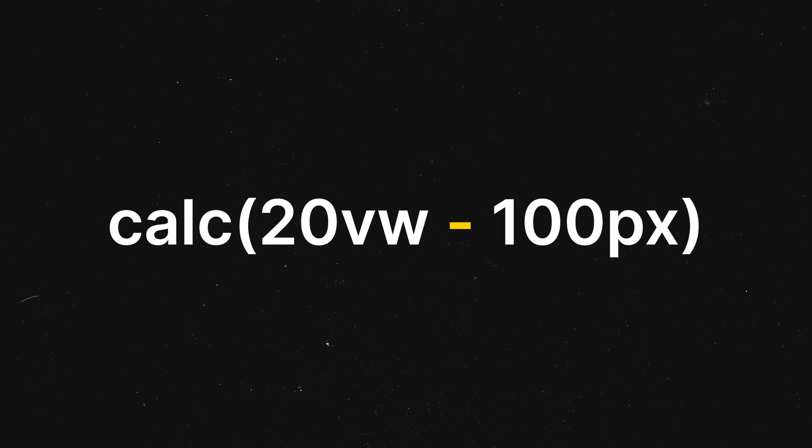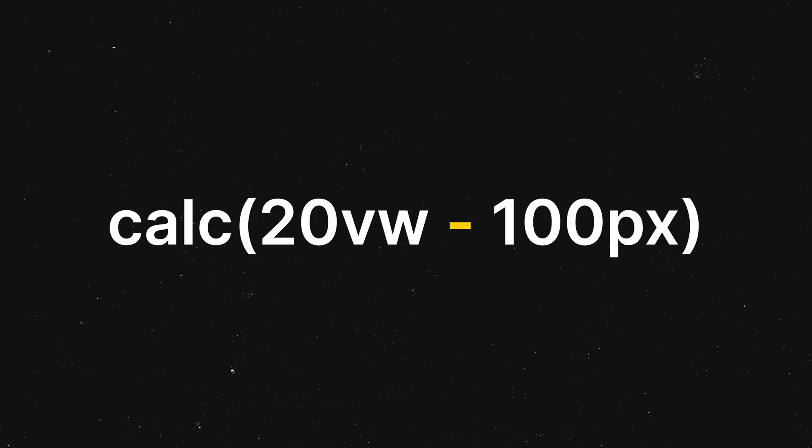You can also subtract values by typing a minus instead of a plus. You can multiply the first value by typing the asterisk symbol followed by a number. You can divide in the same way using the forward slash symbol, but you can't multiply or divide different units.